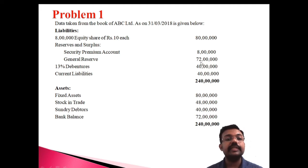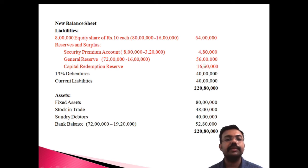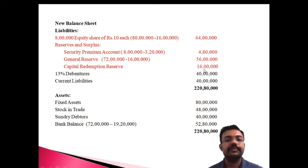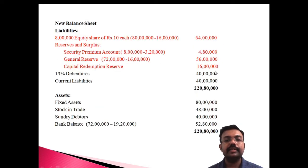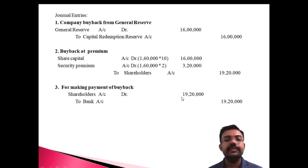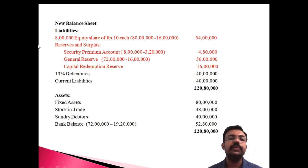Capital redemption reserve is created for 16 lakh. Debentures — no change, 40 lakh. Current liabilities — no change, 40 lakh. On the asset side, fixed assets and stock in trade and sundry debtors — no change. Bank balance was 72 lakh; payment made was 19 lakh 20,000; so new bank balance is 72 lakh minus 19 lakh 20,000 = 52 lakh 80,000. The new total of the balance sheet is 2 crores 20 lakh 80,000.